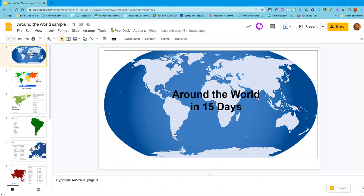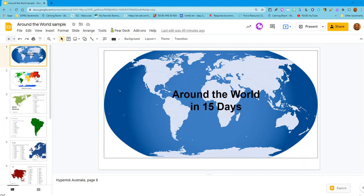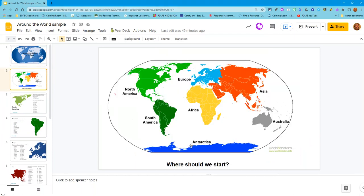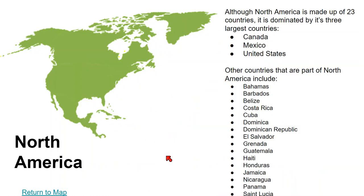Here's an example of how to make a presentation interactive using hyperlinks. I've been creating a presentation called 'Around the World in 15 Days.' I have a launch page where I'm going to create hyperlinks that take me to pages about specific continents. When I'm on this page and click on North America, it takes me to the page regarding North America. I used a hyperlink and now I'll use another hyperlink to get back to where I started.